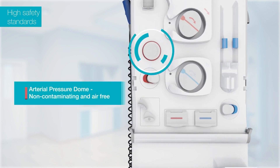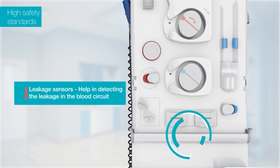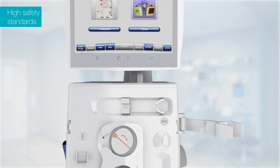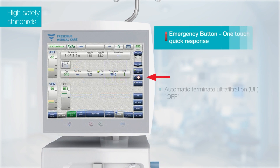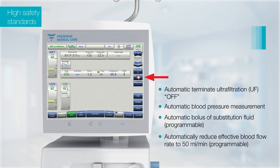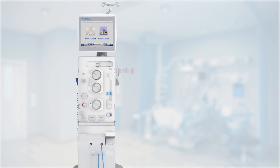A non-contaminating and air-free arterial pressure dome helps in arterial pressure monitoring. The leakage sensors help in detecting leakage in the blood circuit and internal hydraulics, thus preventing potential patient complications. The emergency button provides a systematic one-touch quick response in case of an emergency during treatment, such as severe symptomatic hypertension with obtundation.